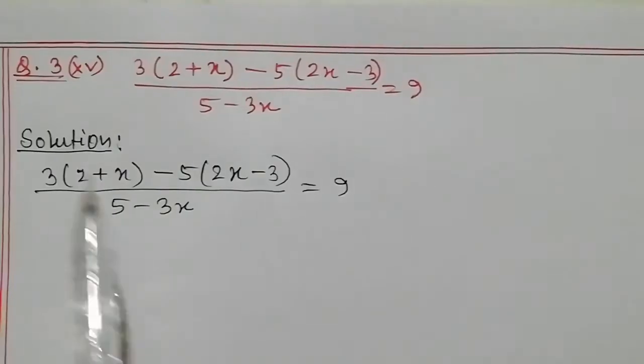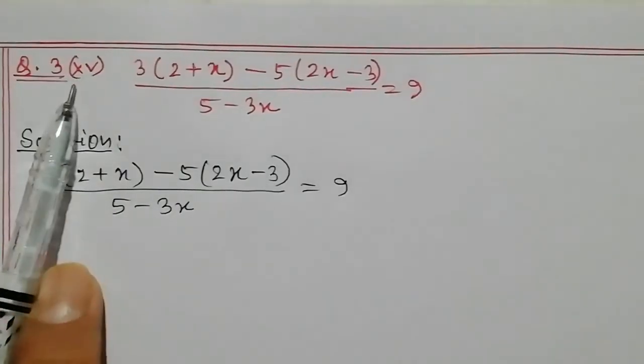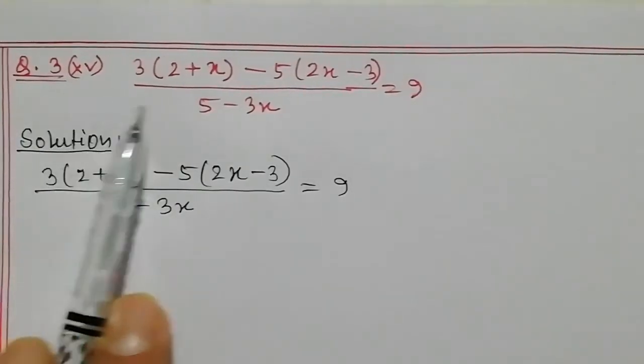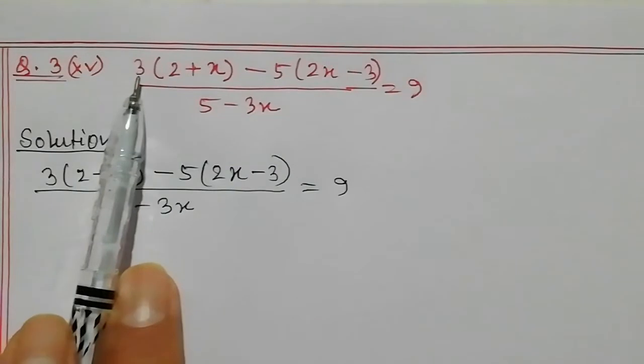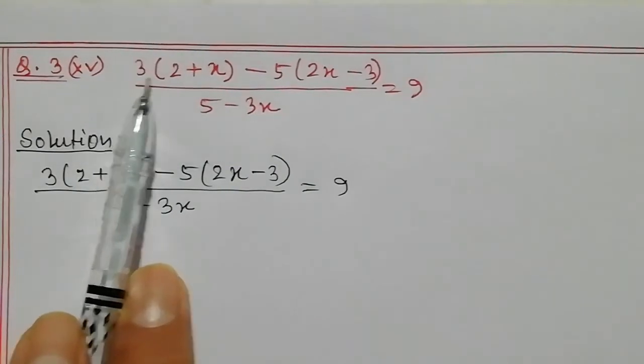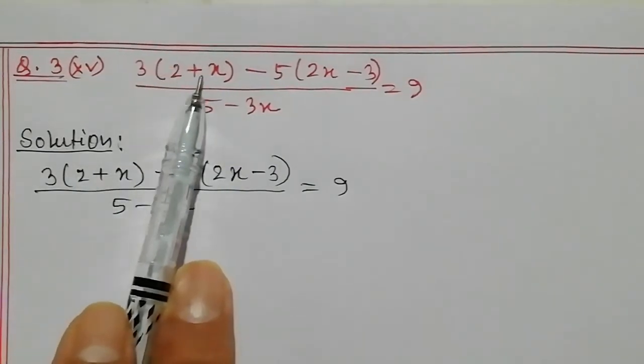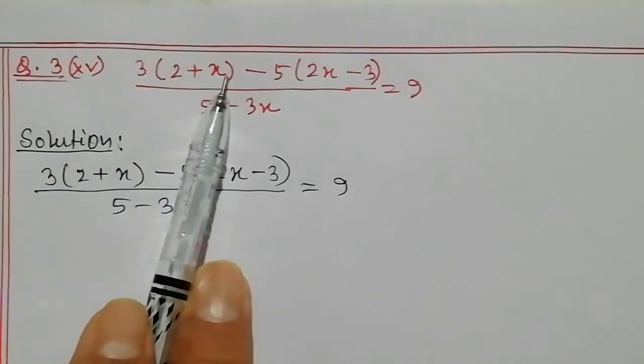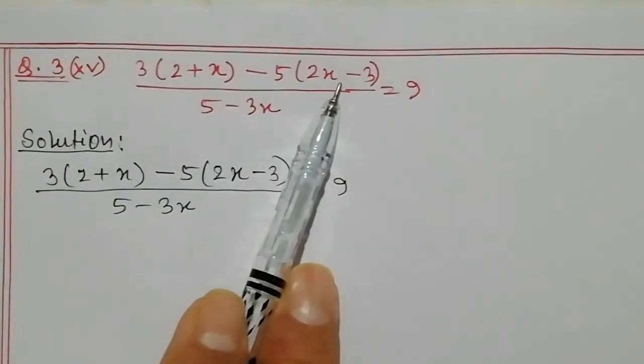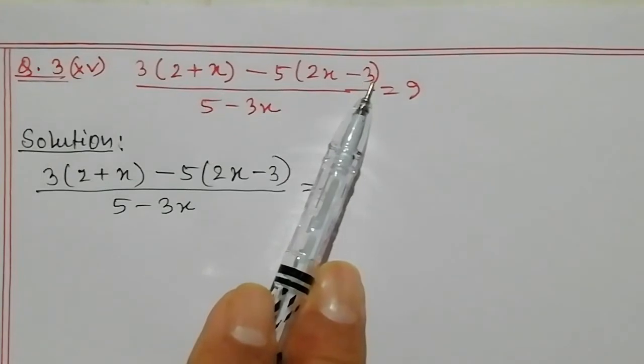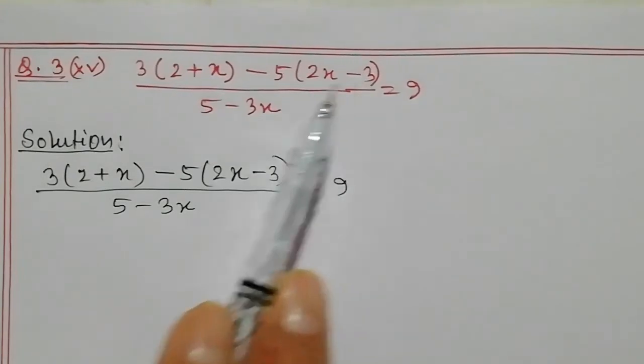Students, I am going to give you question number 3. This is: 3 whole into 2 plus x, minus 5 whole into 2x minus 3.